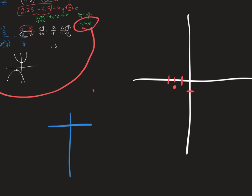What I like to do is plug a point in to the left of my vertex and to the right — like a little t-chart. I'm going to pick a number to the left of negative 1.5, so let's plug in negative 3, and a number to the right that's easy to plug in, which is 0. I'll plug in both negative 3 and 0.